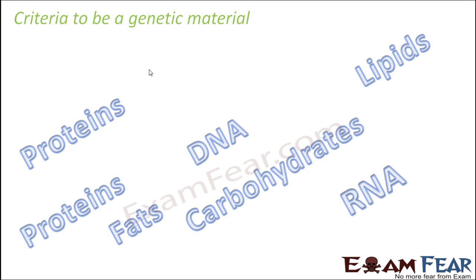There were many contenders to be a genetic material: proteins, fats, carbohydrates, DNA, RNA, lipids. They are all contenders who can be a genetic material. But let us see how many of them are able to satisfy the criteria to be a genetic material.